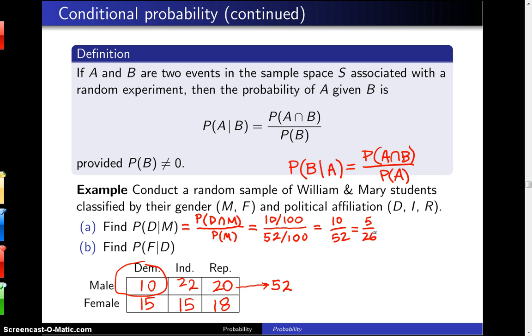You can go the other direction as well. You can say, what is the probability someone is female given they are a Democrat? And again, using the definition up above, this is female and Democrat divided by the probability of being a Democrat.